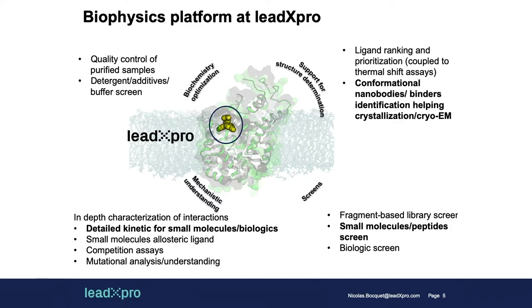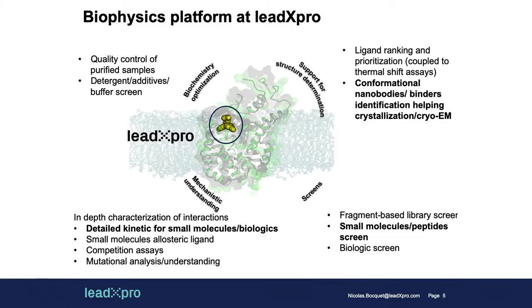Focusing on the binder part, it's very important for us to really characterize the binder properties. It's involved in all aspects of the work we are doing. That's why we were really willing to implement a biophysical tool allowing us to characterize these binders all the way through — from the very beginning, where we need to quality control the purified sample we have, but also for screening purposes. Membrane proteins can bind a binder in one condition but not in another, for example in a specific detergent, so we need to screen for that. It's also very important to support our structural effort — when we have many different ligands, we need to rank and prioritize them. For nanobodies, we need to know what they are doing to the protein: are they stabilizing it in one conformation, how well do they bind?